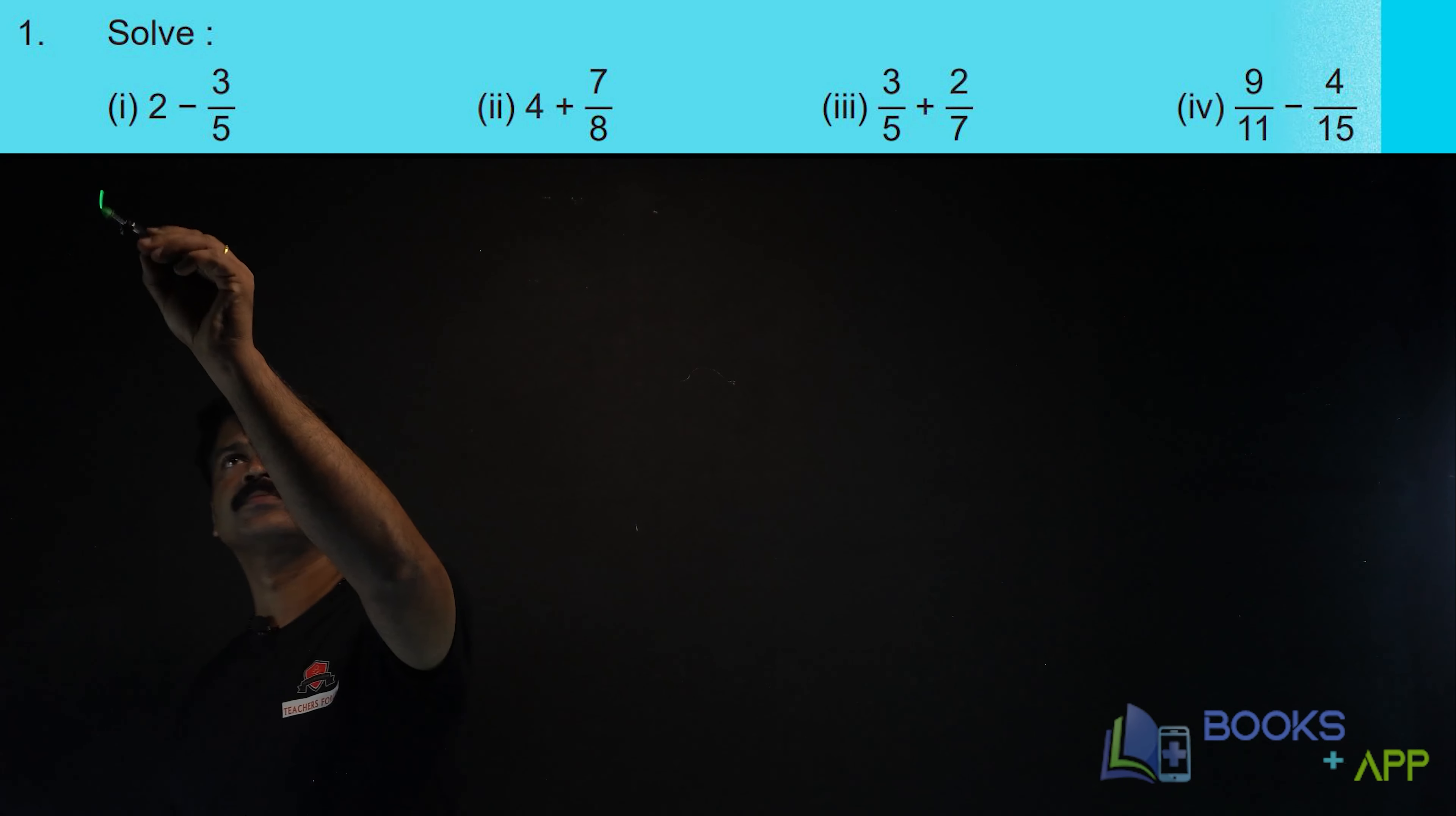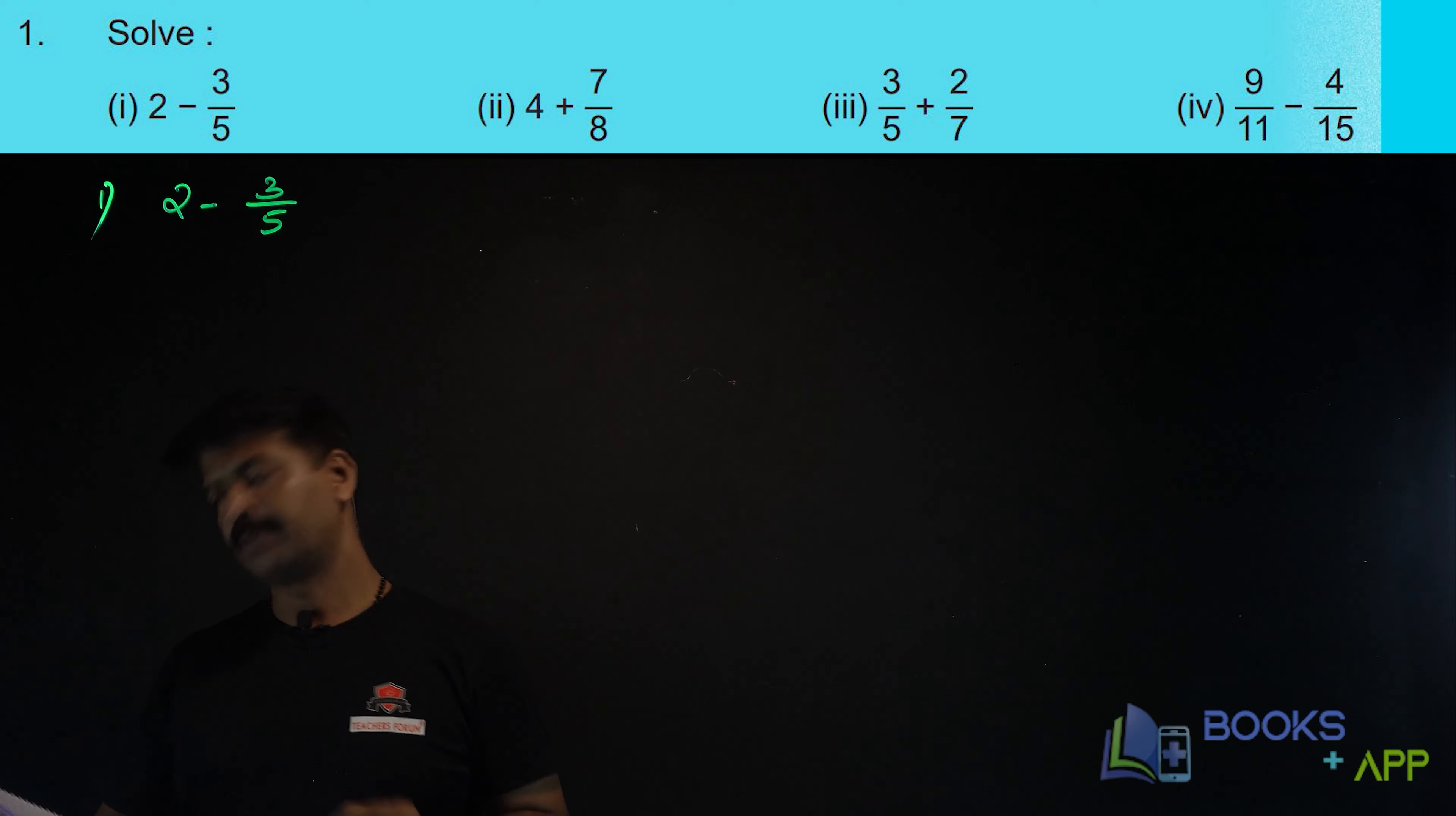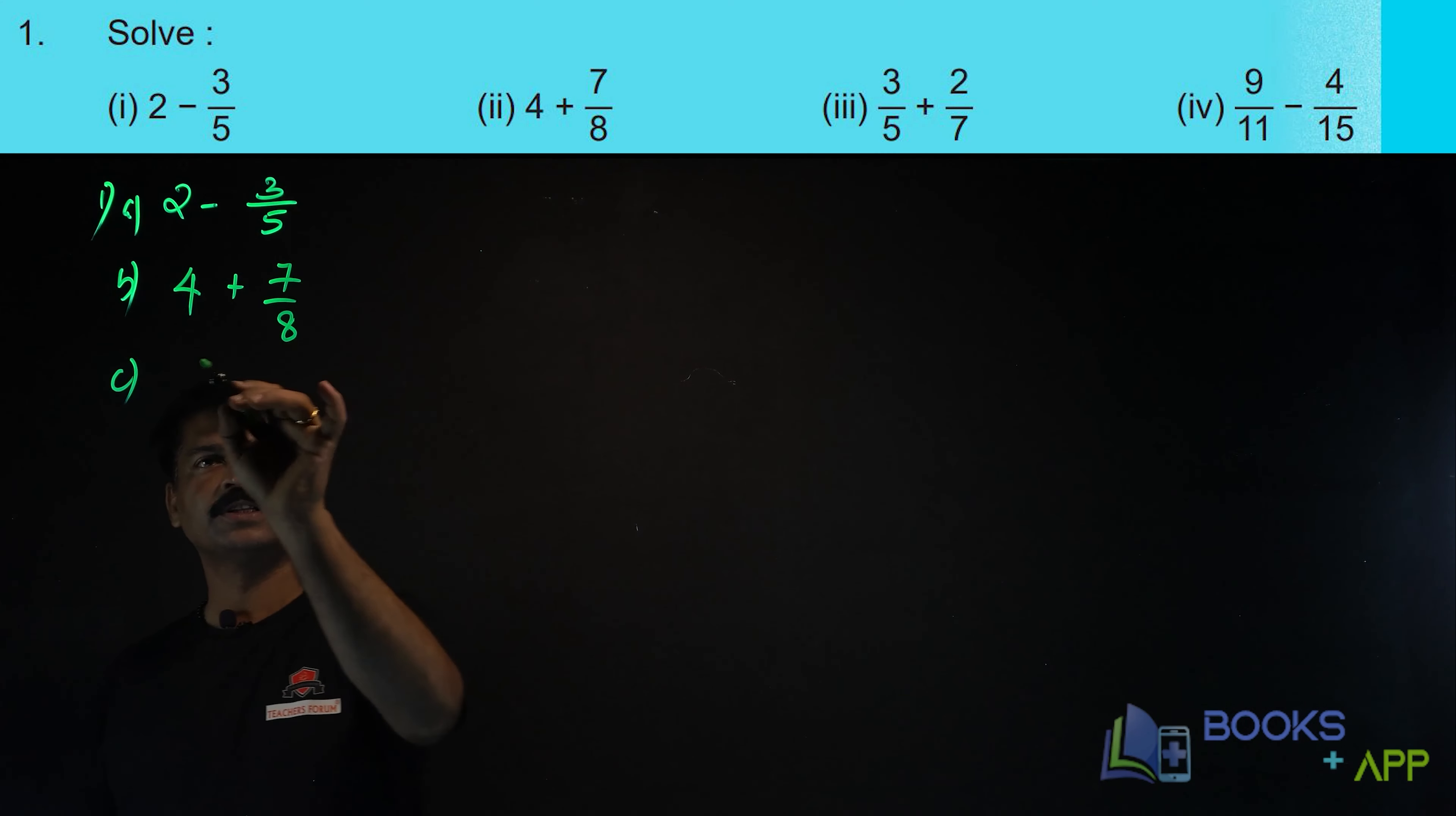Question number 1. Solve 2 minus 3 by 5. Let us solve one more. It is A. B is 4 plus 7 by 8. C, one more is 3 by 5 plus 2 by 7.